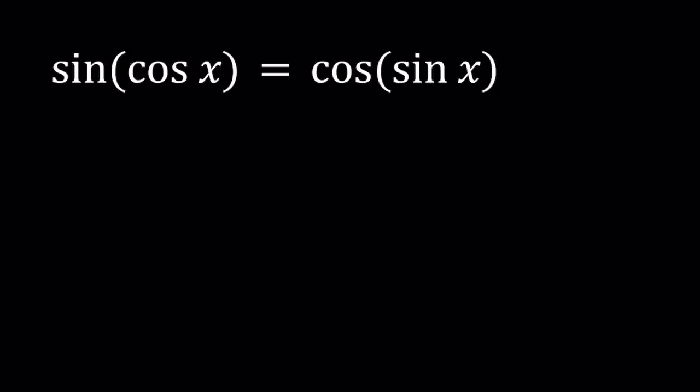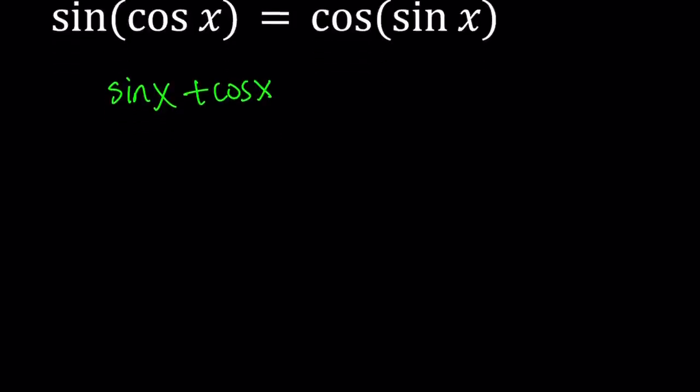Before we start solving this equation, I would like to talk about something that we will use in our solution. Let's go ahead and take a look at sine x plus cosine x. Now at this point you might be wondering why this is going to come up. You'll see in a little bit. I want to find the maximum and minimum values for this sum. Now there's a couple different ways to go about it. Obviously, you can use differentiation, you can use different formulas, so on and so forth. The approach that I'm going to use involves the following.